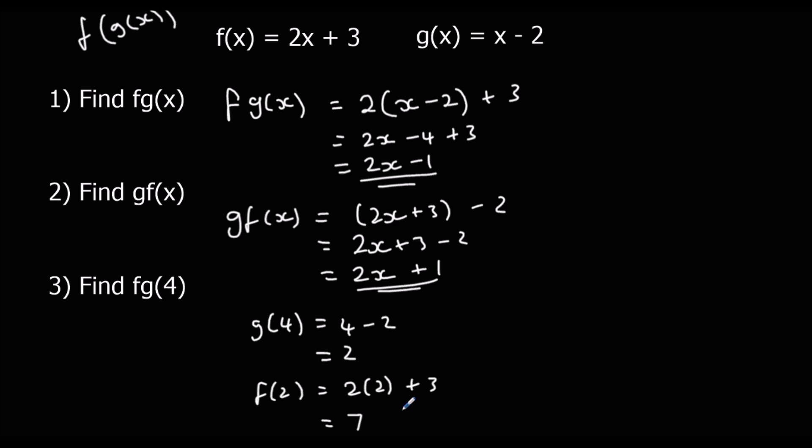Let's have a look. If I did put 4 into f g, so I've put 4 in here, 2 times 4, 8 take away 1, 7. So it gives us the same answer, which is good. There's our answer. Let's have a look at the next one.